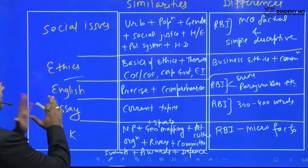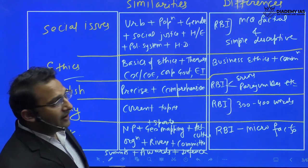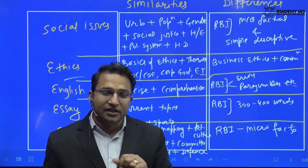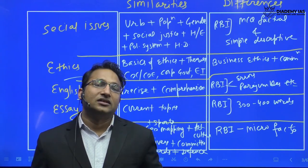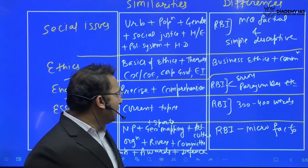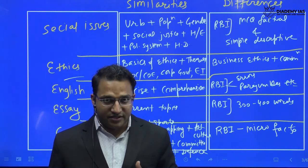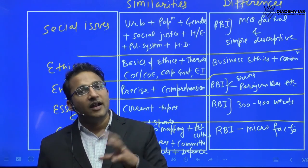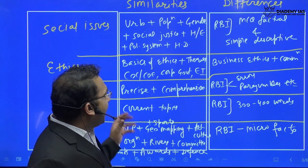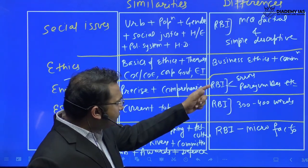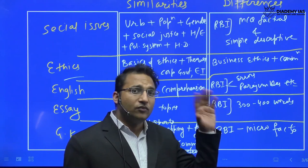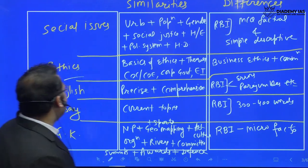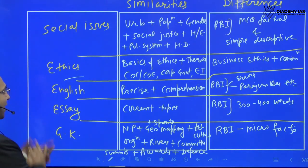For the English section: UPSC prelims CSAT has comprehension, which is also present in the RBI mains. The UPSC mains English compulsory paper has précis writing, which is also tested in the RBI mains. The key difference is that in UPSC English is qualifying, whereas in RBI it is counted for merit. RBI English also focuses on concepts like error spotting and para jumbles, which are not a focus in UPSC.